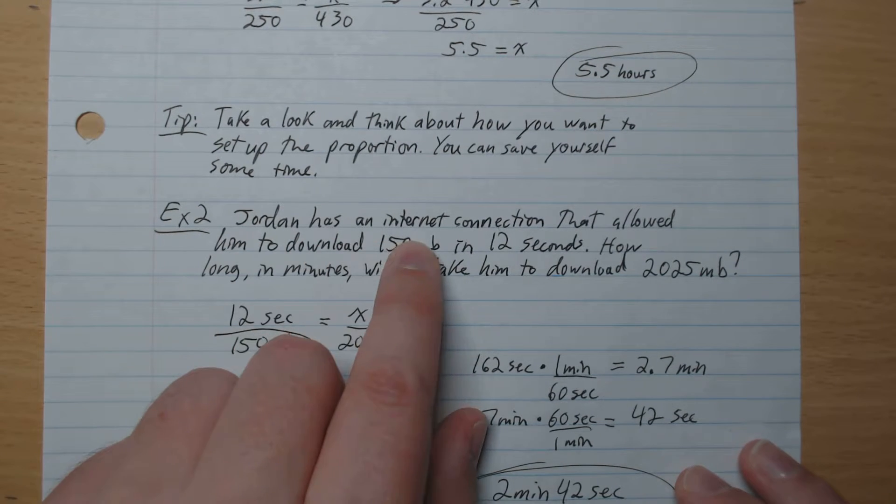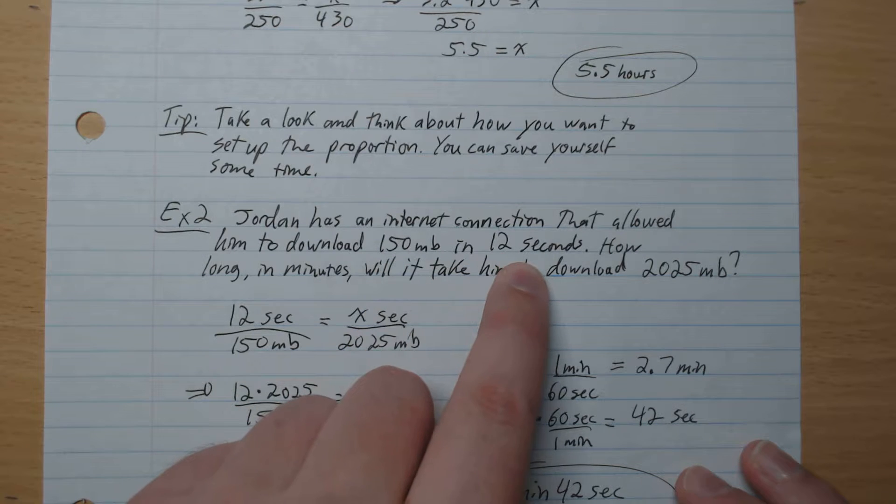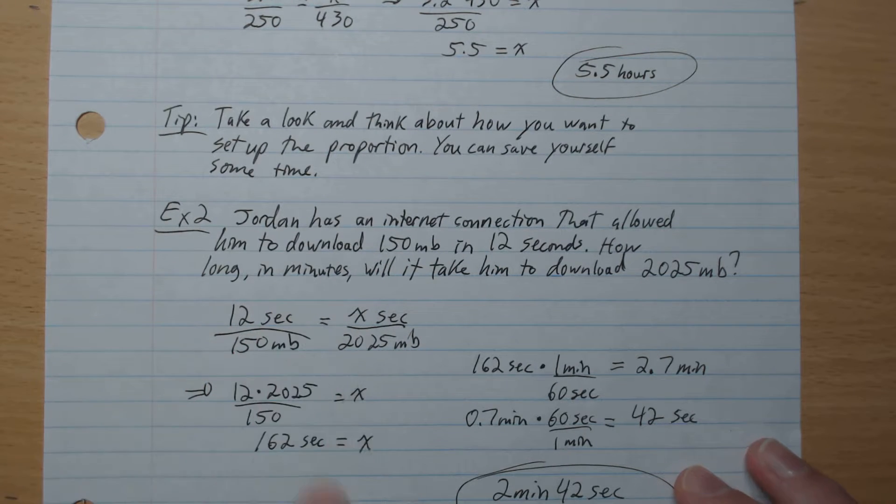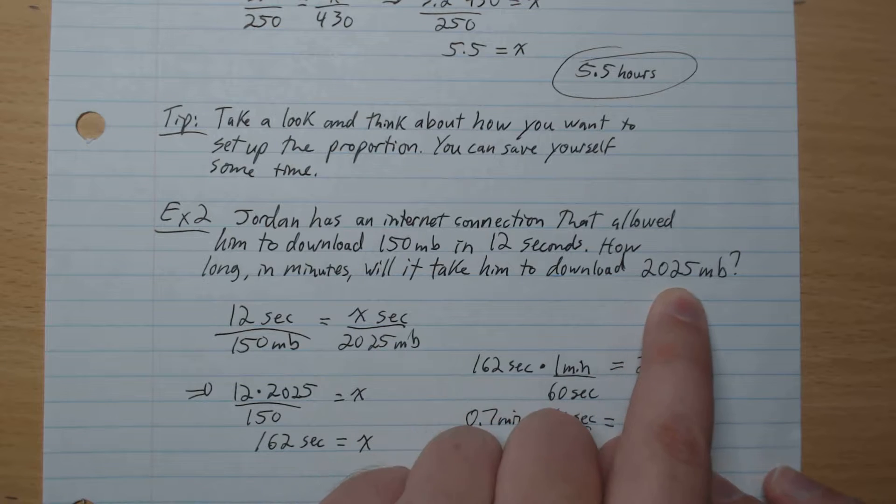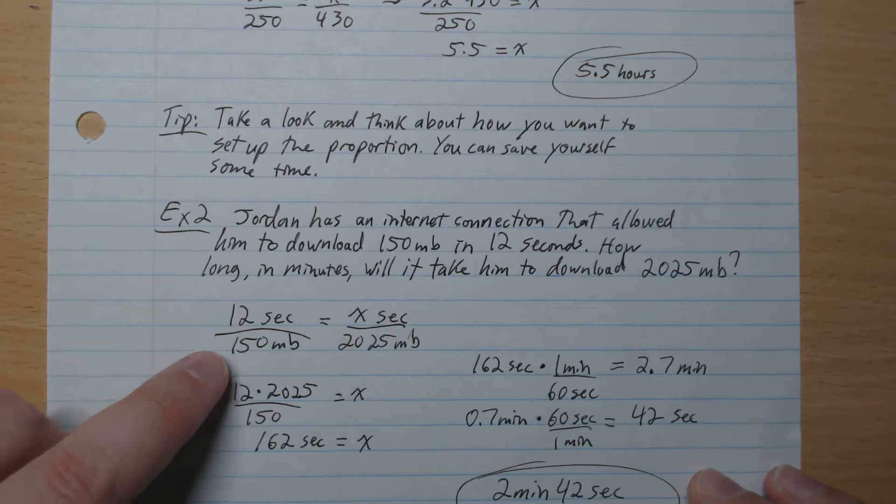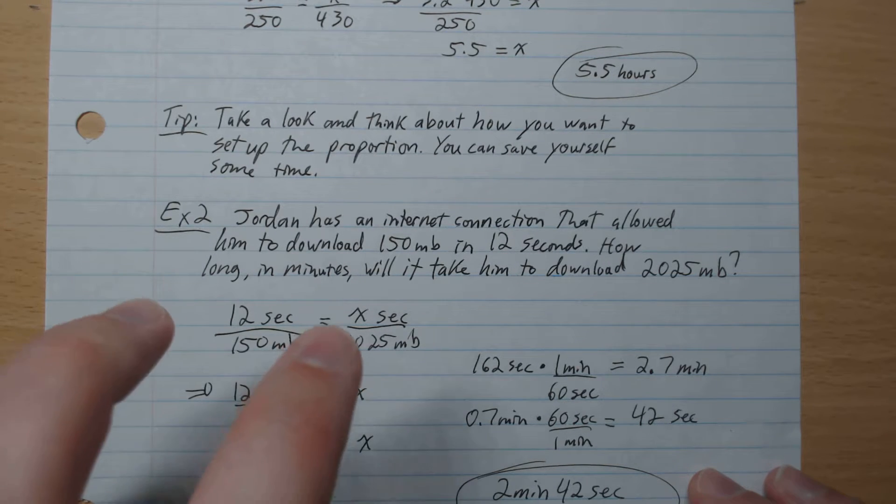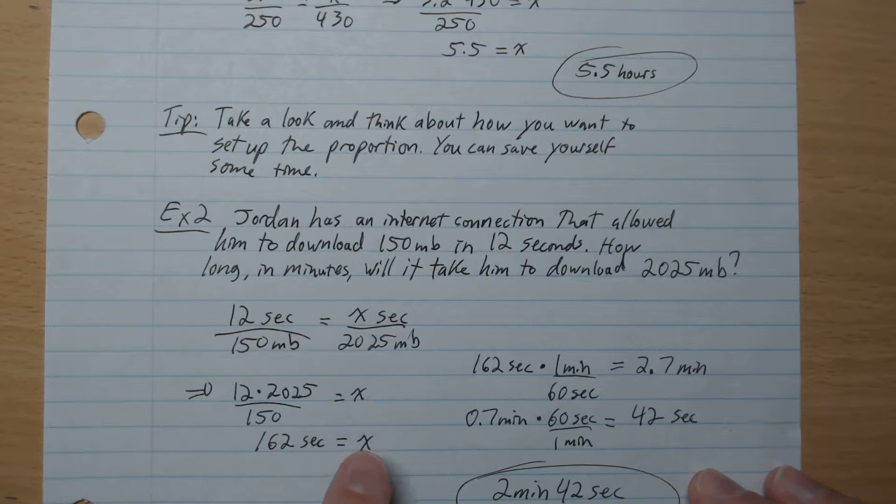Jordan has an internet connection that allowed him to download 150 megabits in 12 seconds. How long in minutes will it take him to download 2025 megabits? Instead of writing 150 over 12, we're going to write 12 seconds over 150, which gives unknown seconds over 2025. Now it's easier. We can go times 2025 on both sides, and so x is 162 seconds.